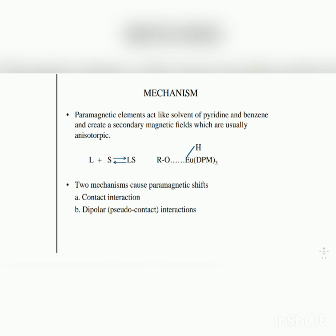Paramagnetic elements act like solvents of pyridine and benzene and create a secondary magnetic field, which is usually anisotropic. There are two mechanisms that cause paramagnetic shift. The first one is contact interaction, and the second one is dipolar, that means pseudo-contact interaction.